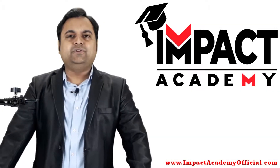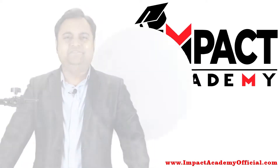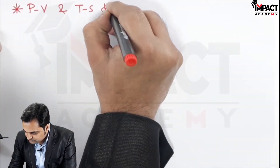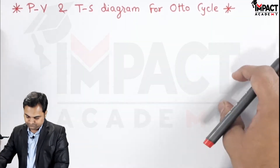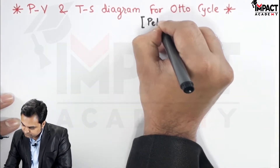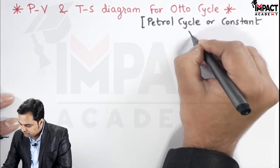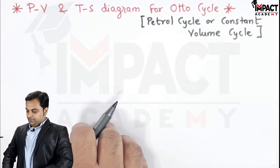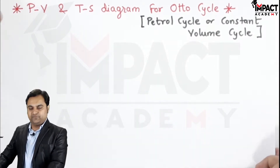Hi friends, here in this video we are going to see the PV and TS diagram for the Otto Cycle. The Otto Cycle is also called the petrol cycle, used for petrol engines, and it is also called the constant volume cycle.